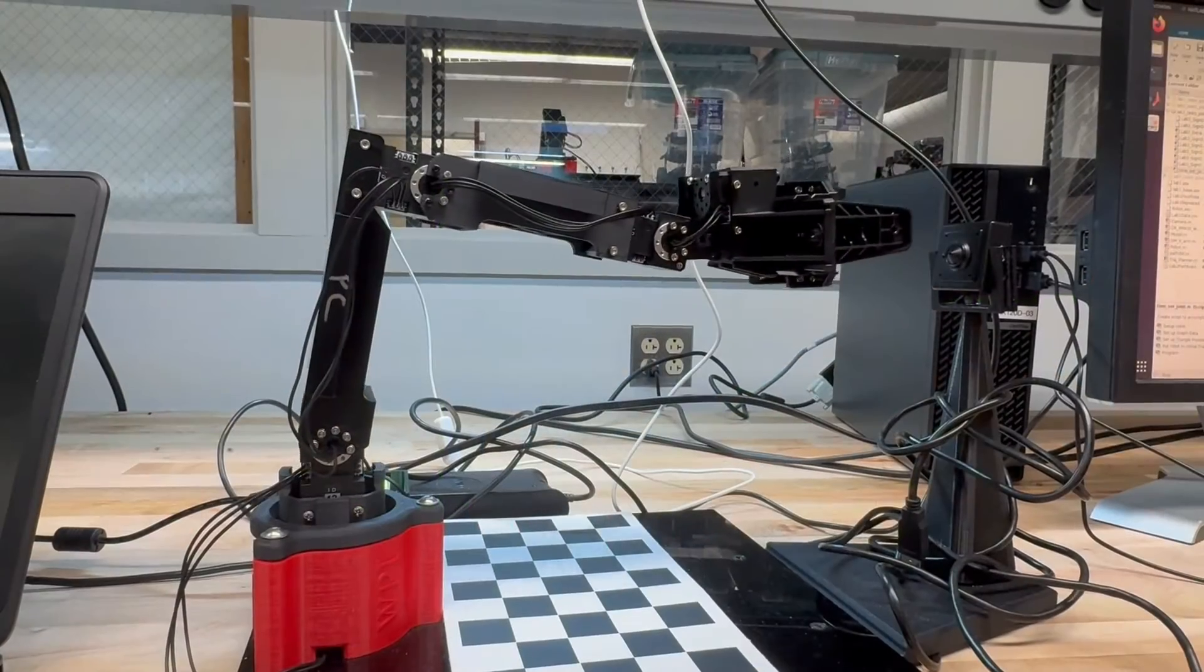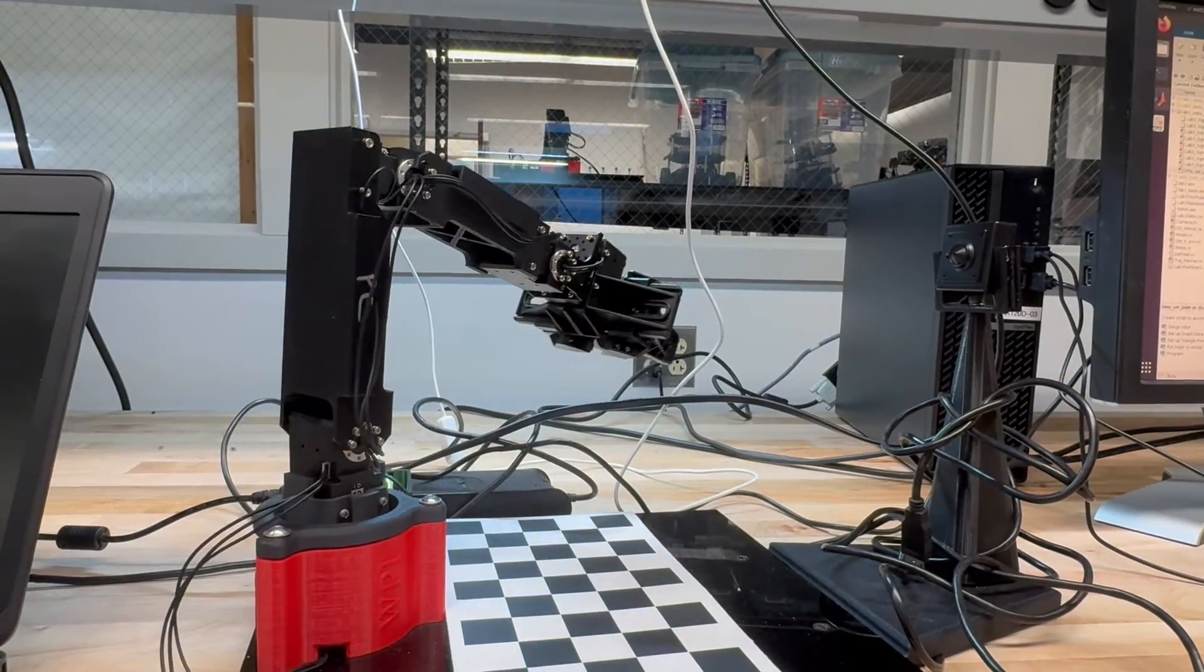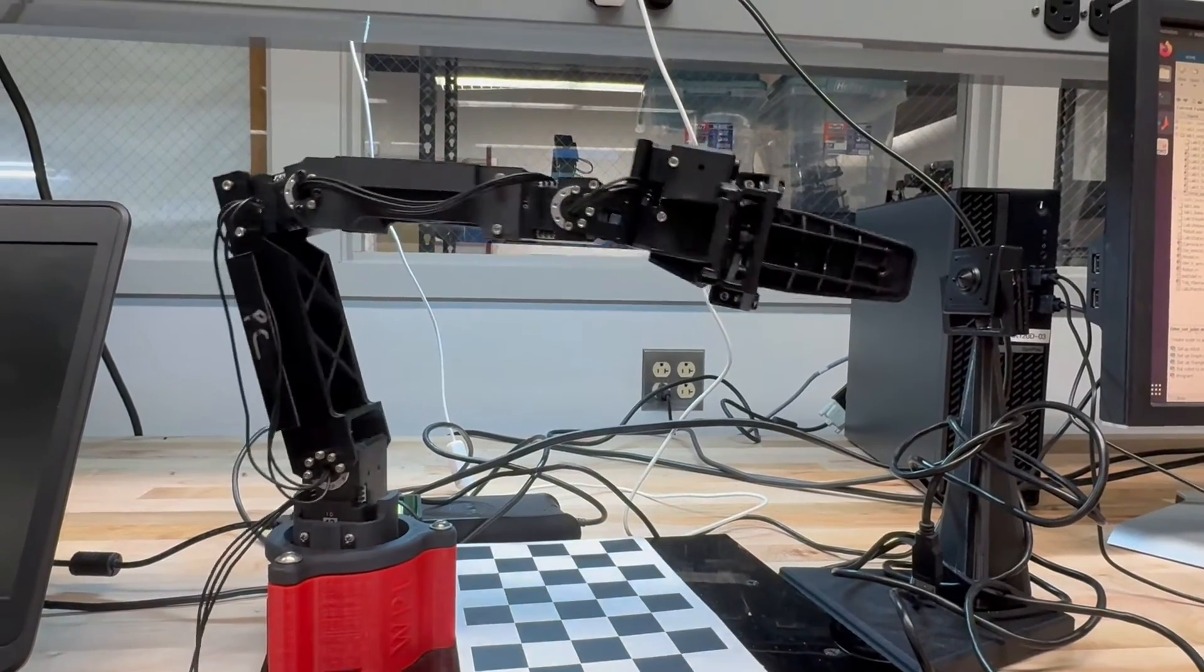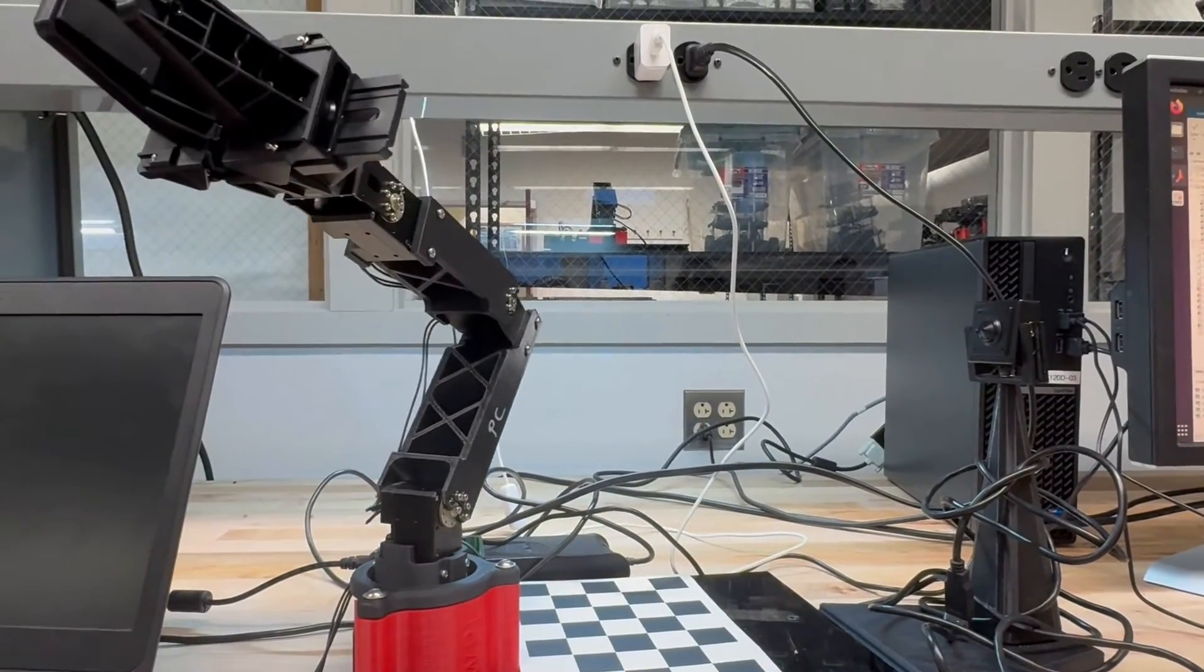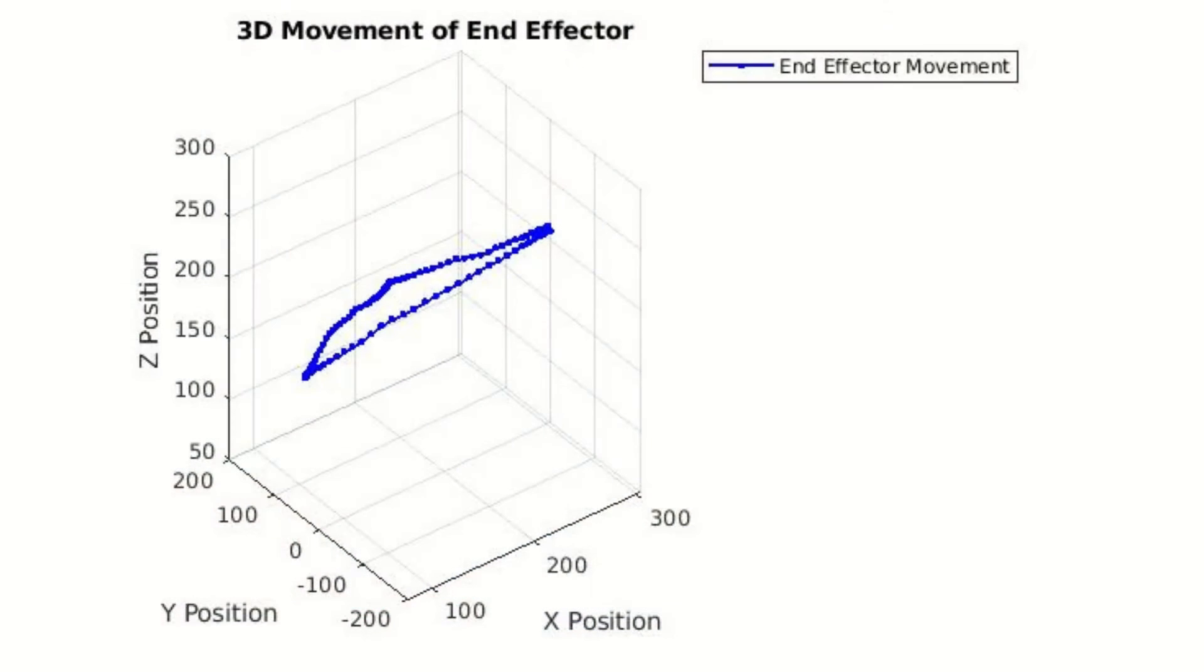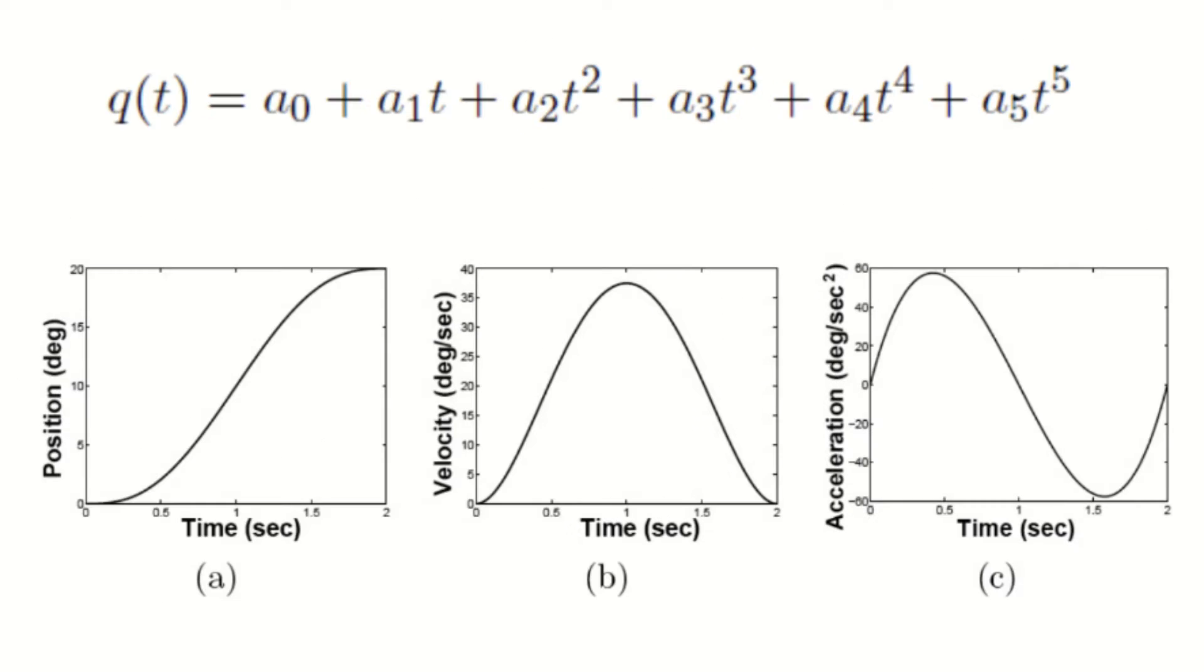Now that we can send the robot to points in the workspace, we want to create a better method for controlling more aspects of the robot besides only its joint parameters. We can do this by creating trajectories for the end effector using cubic and quintic polynomials.